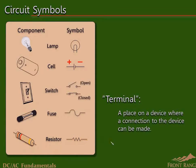A resistor is a type of load that is usually used to limit the amount of current flowing in a circuit. Resistors convert electrical energy into heat energy. Wires and other conductors are represented with lines; there is no way to tell from the way the lines are drawn whether the conductor is insulated or not.